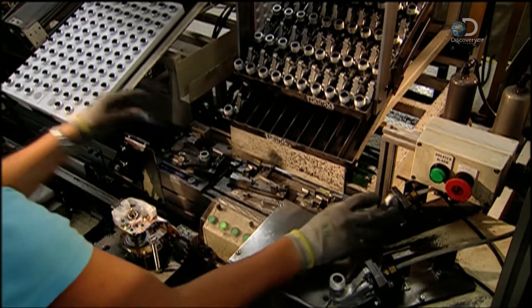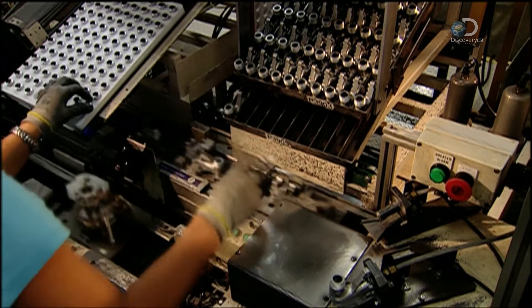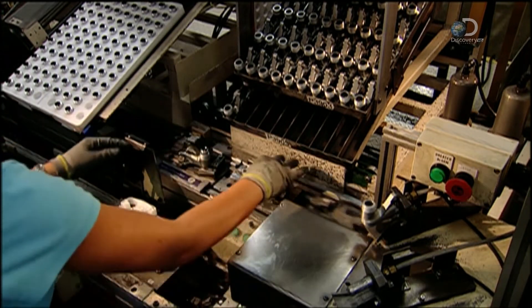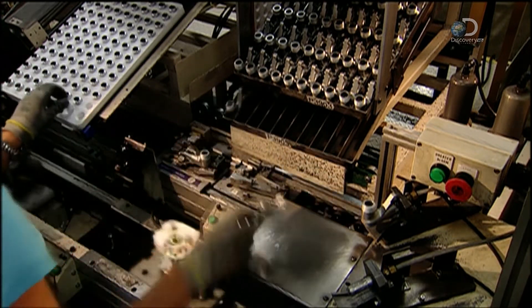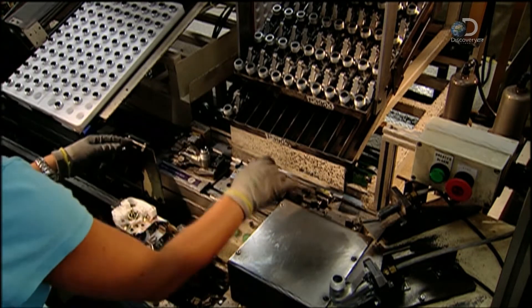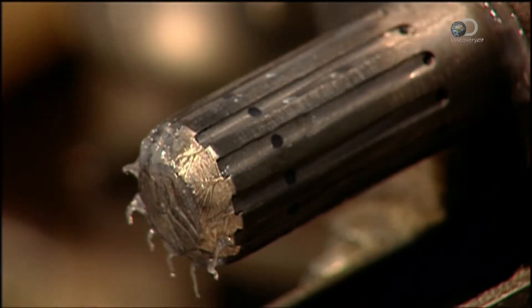The explosive device, called the micro gas generator or MGG, is installed. After the inside of its aluminum cylinder is lubricated with grease, a piston is inserted into the MGG.